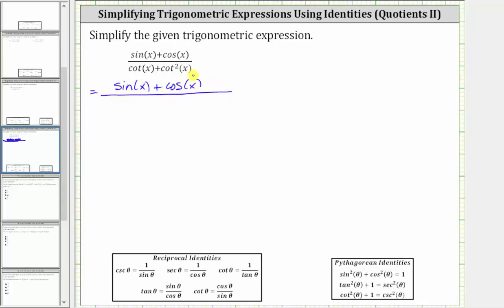converting to sines and cosines gives us cosine x divided by sine x plus cosine squared x divided by sine squared x.